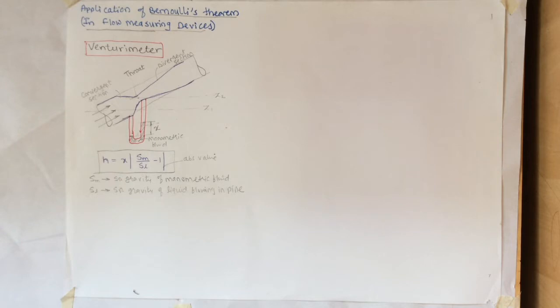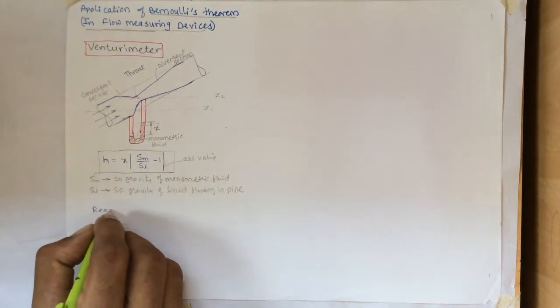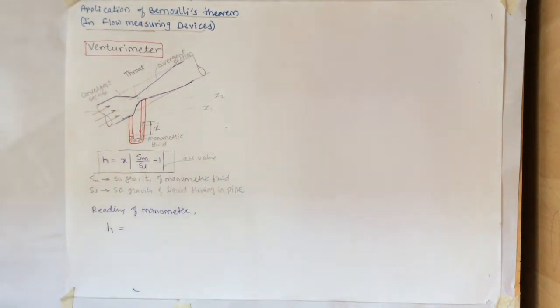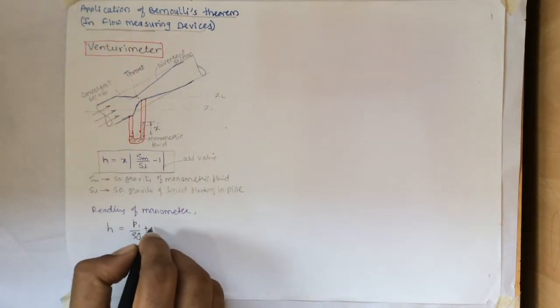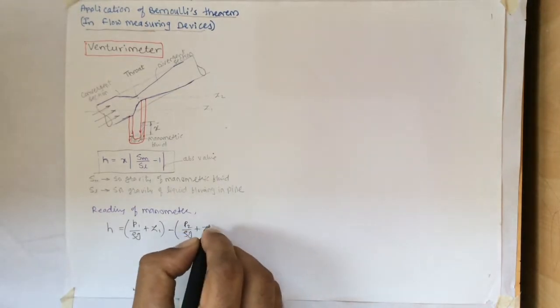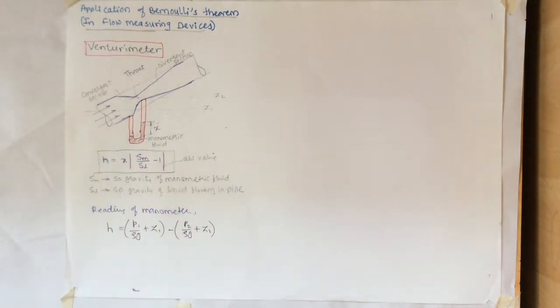Now we can say that this manometer will show you the readings. The manometers are used to read the pressure differences or the pressure head. But here as this Venturi meter is inclined, we get as a reading of manometer H equals P1 by rho g plus Z1 minus bracket P2 by rho g plus Z2. The reading of manometer will give you pressure head difference as well as the datum difference.